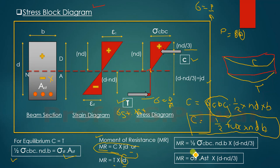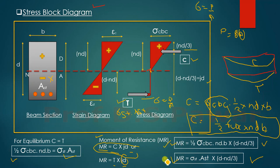The moment resistance (MR) of the section can be calculated as MR = C × jd or MR = T × jd. By substituting the values of C and T, we get two equations for moment resistance capacity of the section. This is how we calculate the moment resistance of a given section in working stress method. In the next lecture, we will see what is meant by balanced section, under-reinforced section, and over-reinforced section.